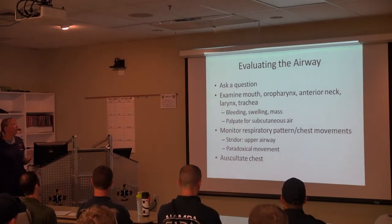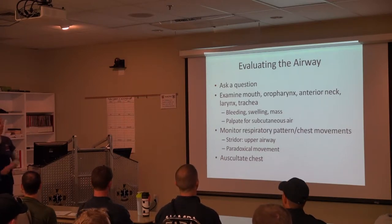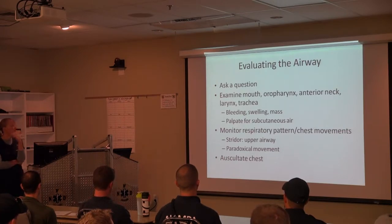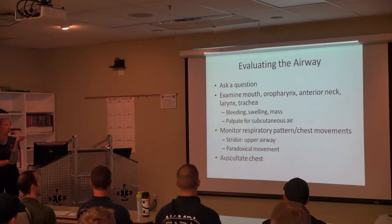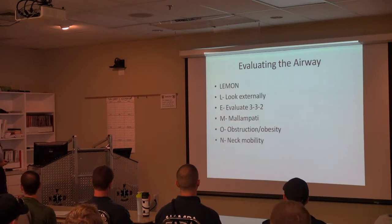Ask a question and evaluate how well their phonation is — how well is their coordination of the pharynx and larynx, and are they going to be able to protect their airway? Look for bleeding, swelling, masses. Palpate for subcutaneous air. Stridor indicates upper airway narrowing to less than 50% of normal. Look for paradoxical movements, flail chest, and listen to the chest.